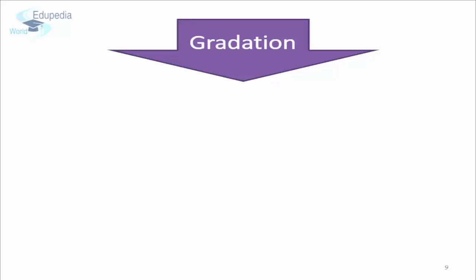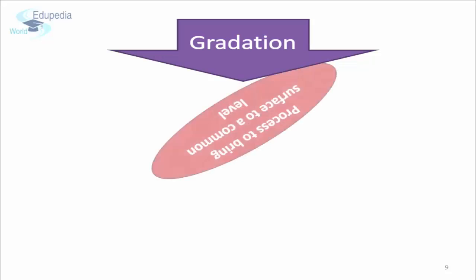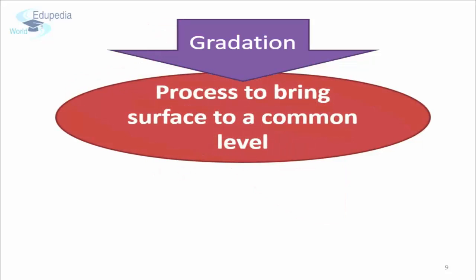The earth surface is not flat. There are highlands and lowlands, mountains and sea. All these features are not at a common level. The work of external processes is to try to bring the earth surface to a common level — a process known as gradation.